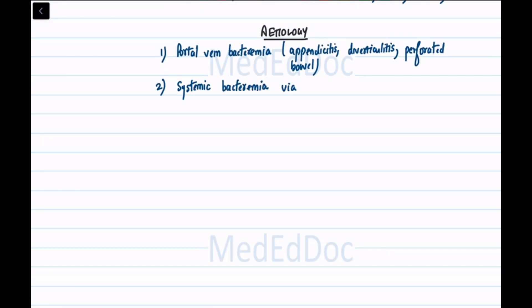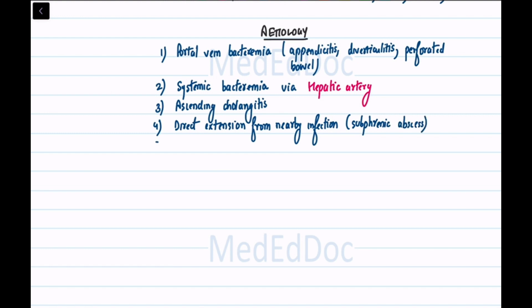Systemic bacteremia spreading to the liver via the hepatic artery. Ascending cholangitis. Direct extension from nearby infections, such as a subphrenic abscess. Introduction of bacteria into the liver through penetrating or blunt trauma that leads to a secondary infection of a hepatic hematoma.